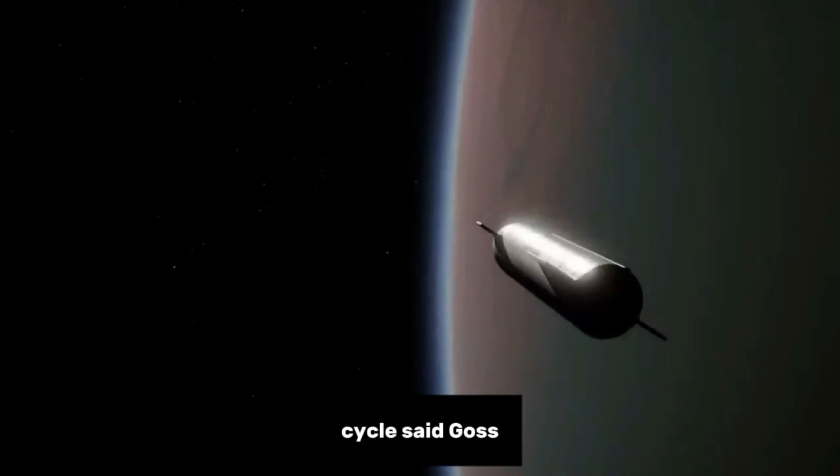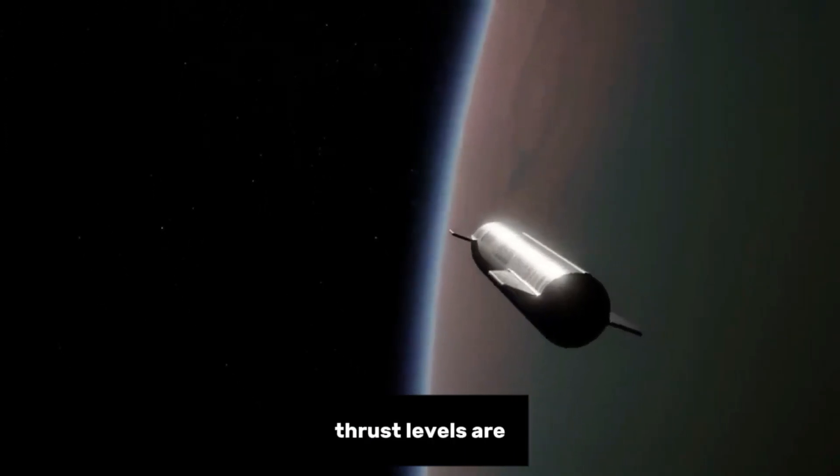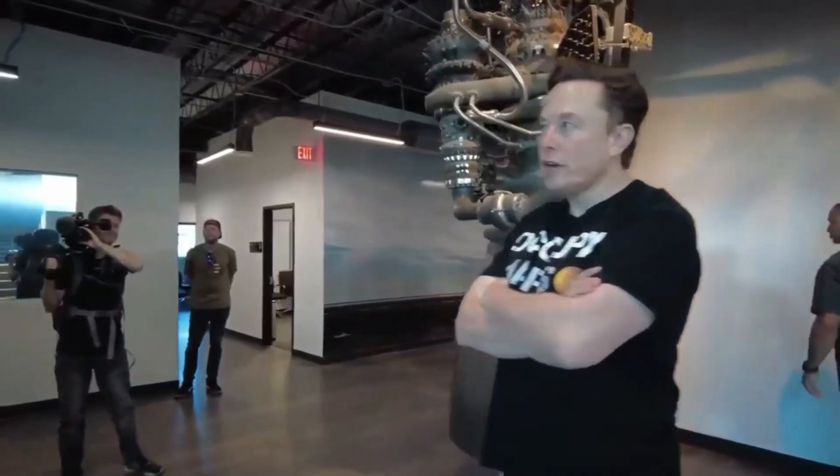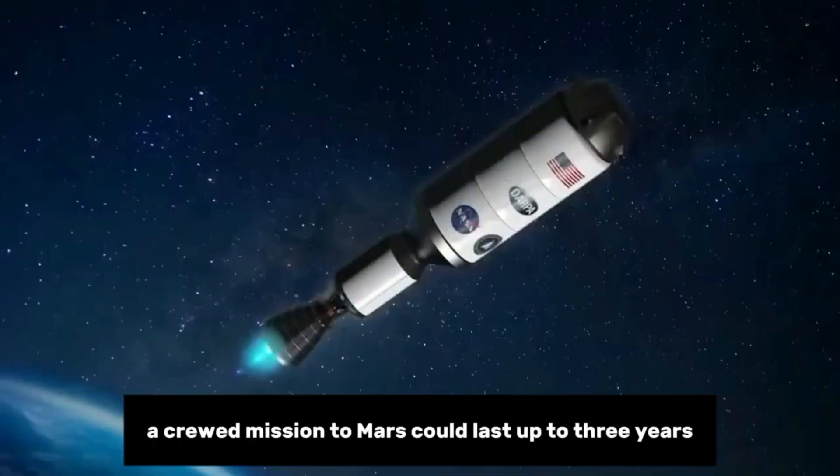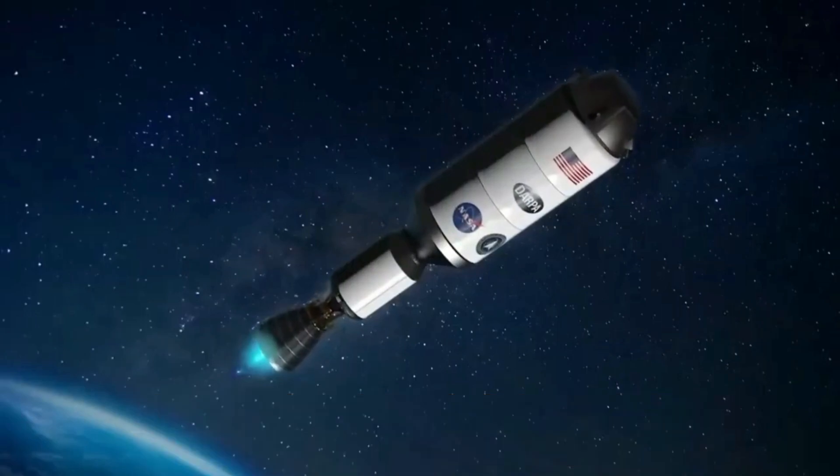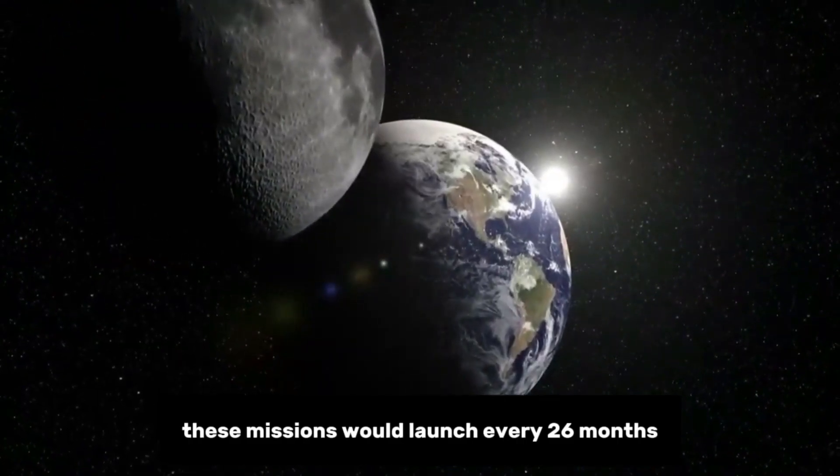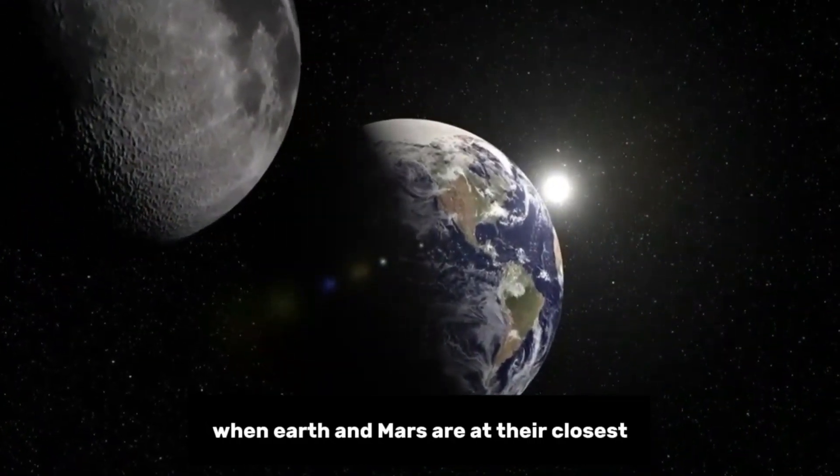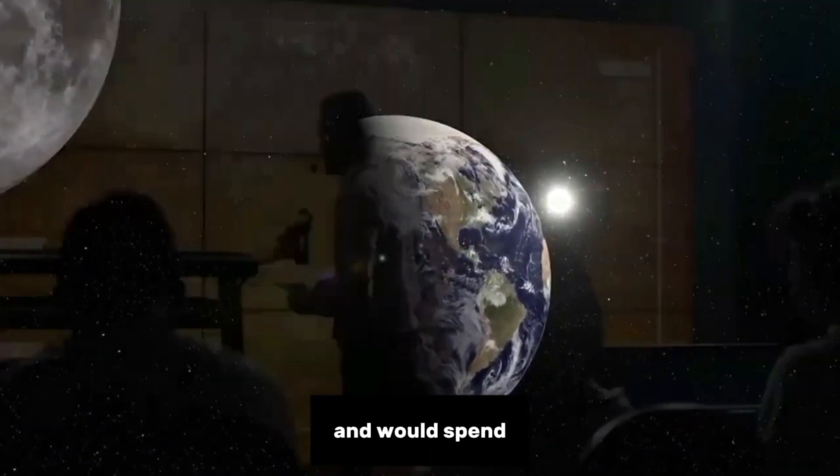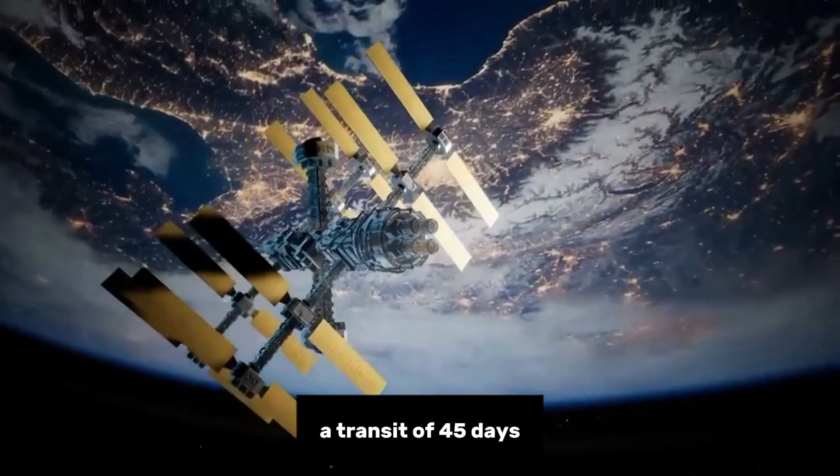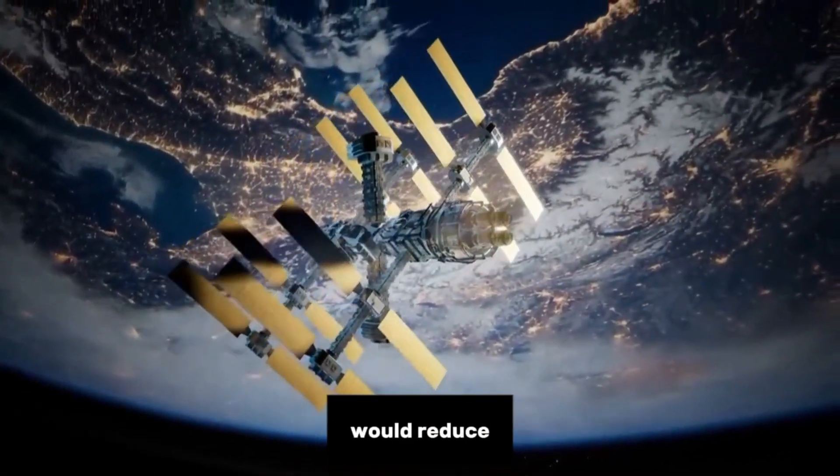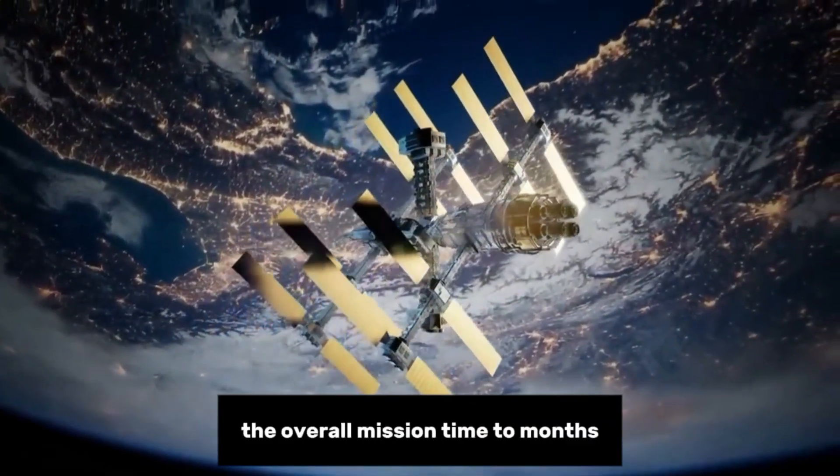When paired with the NEP cycle, said Goss, thrust levels are enhanced even further. Based on conventional propulsion technology, a crewed mission to Mars could last up to three years. These missions would launch every 26 months when Earth and Mars are at their closest (a.k.a. a Mars opposition) and would spend a minimum of six to nine months in transit. A transit of 45 days (six and a half weeks) would reduce the overall mission time to months instead of years.